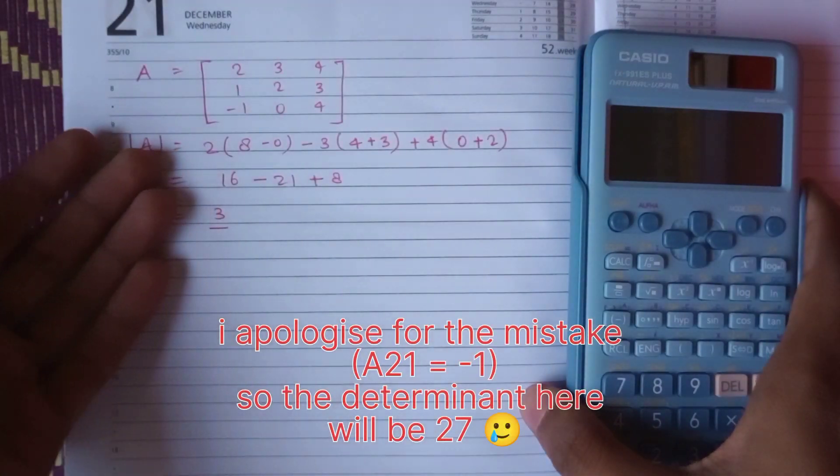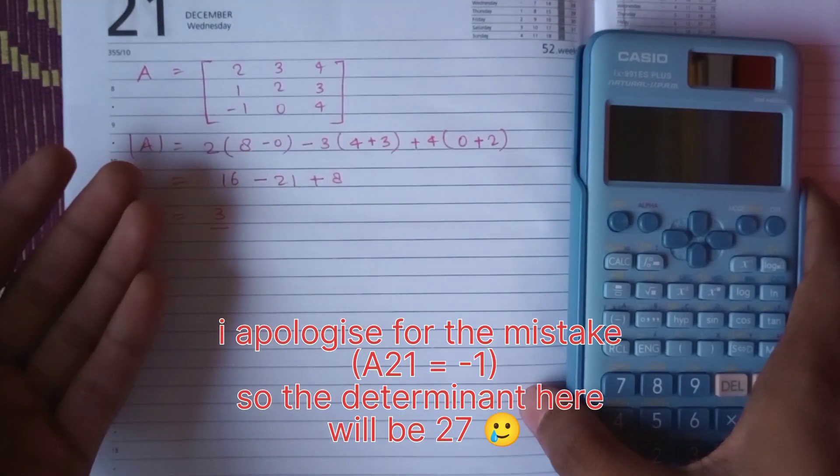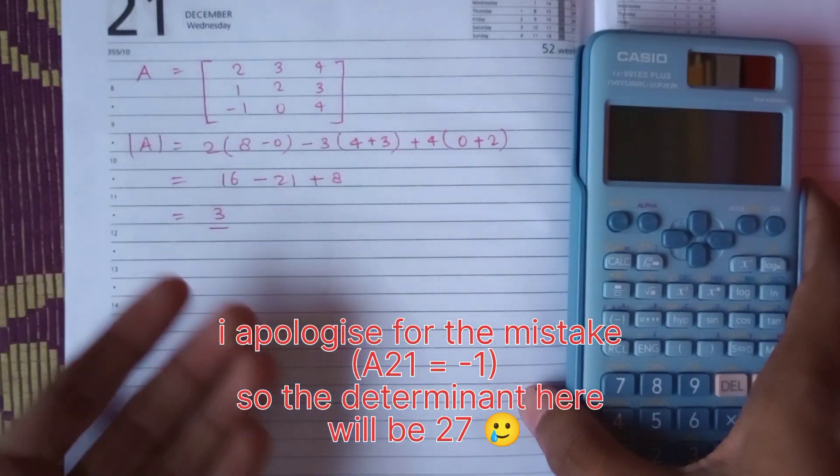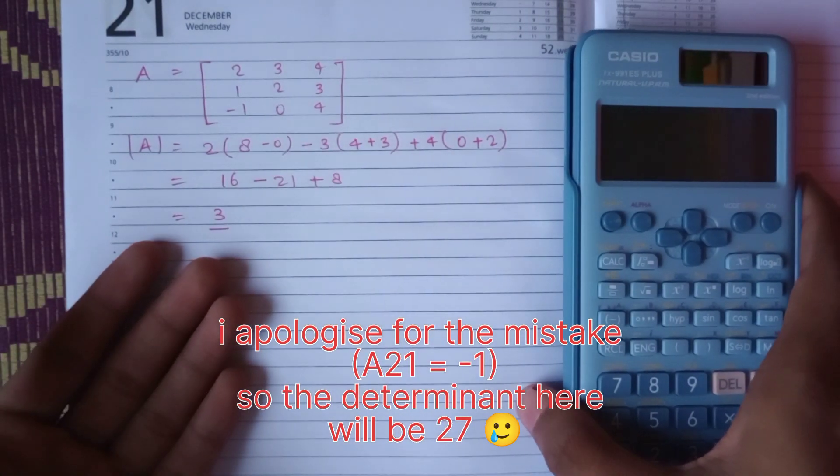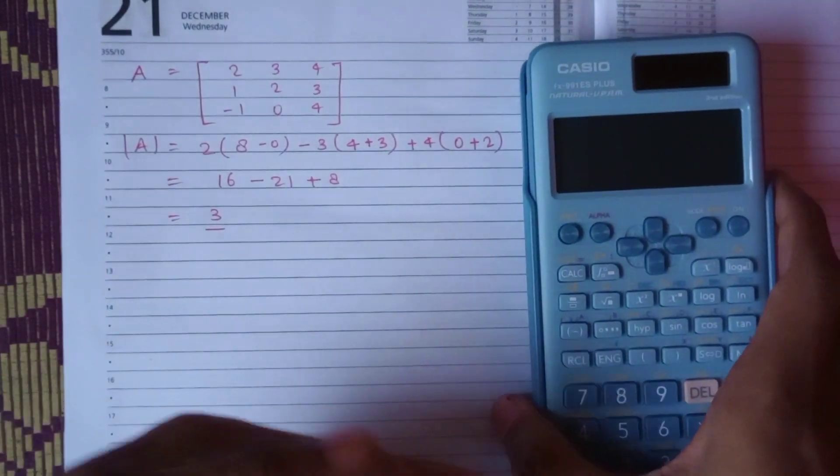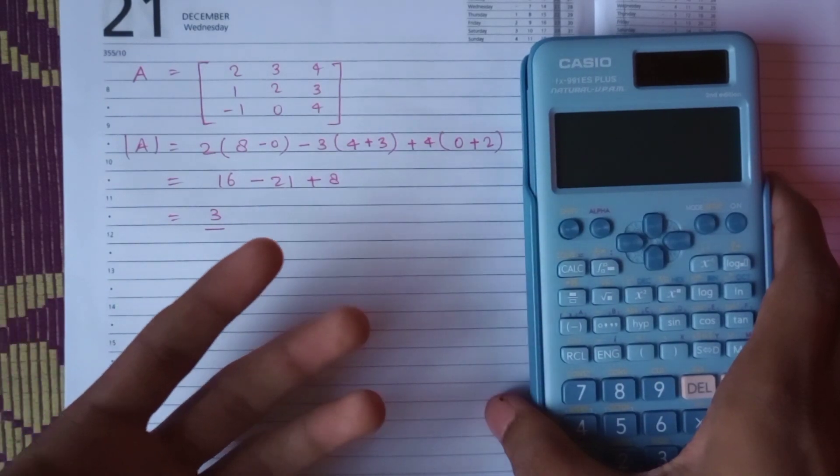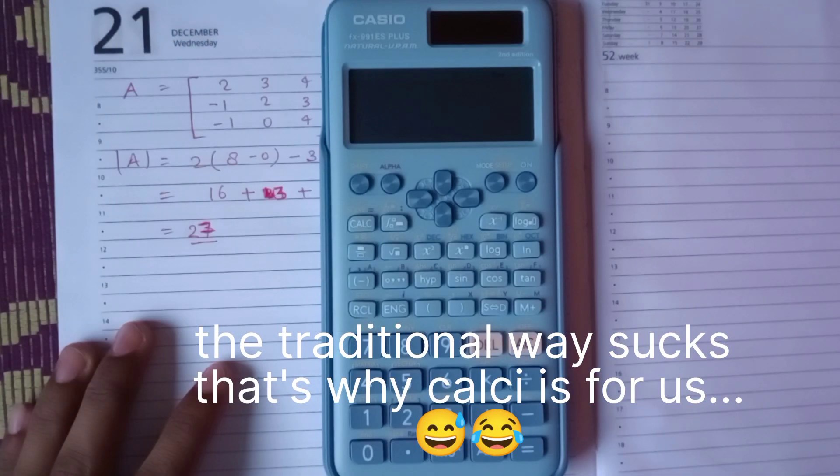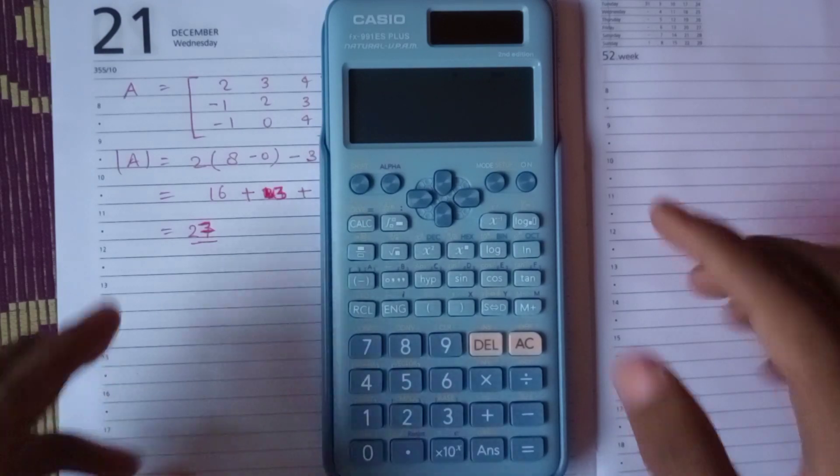In the traditional way, we have to solve like this. This is a simple matrix, so it's not that complicated in the traditional way, but it takes time, so we have to calculate it in the calculator.